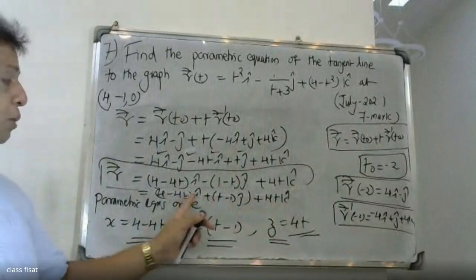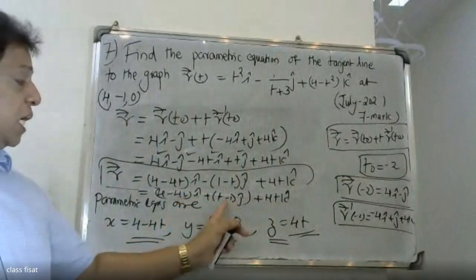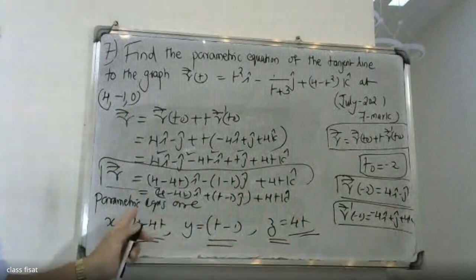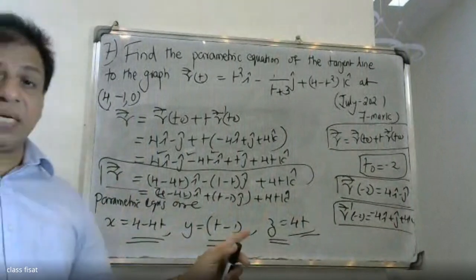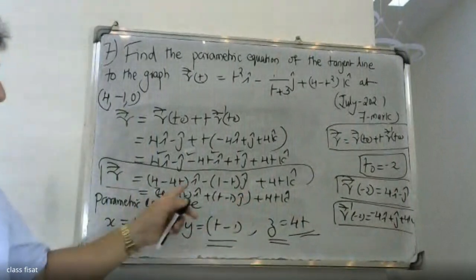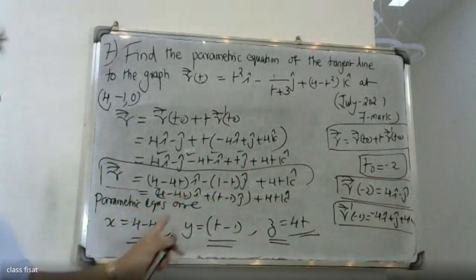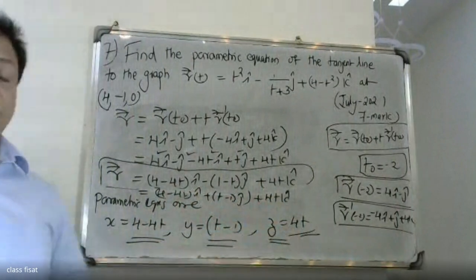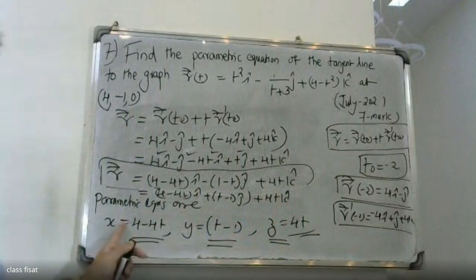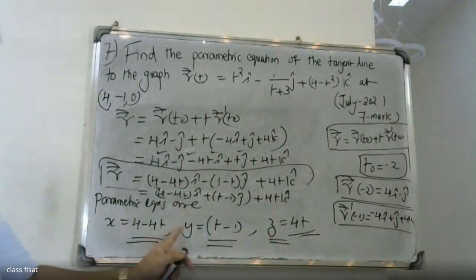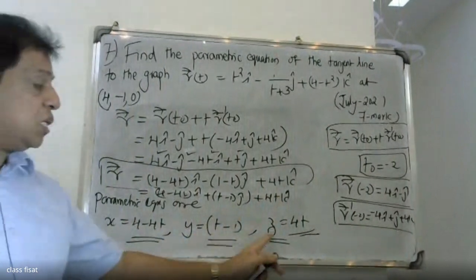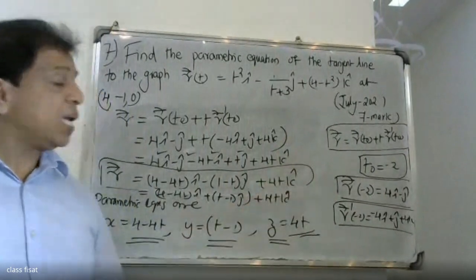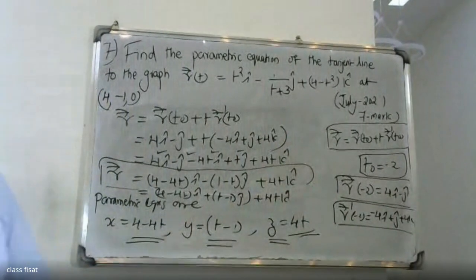We use the i component, the j component, and the k component to write the parametric equations. The parametric equations are: x is equal to 4 minus 4t, y is equal to minus 1 plus t, and z is equal to 4t.